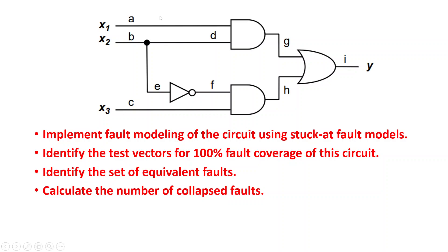This is the circuit we will be discussing today. X1, X2, and X3 are the three primary inputs and Y is the primary output. Every signal line has been named: A, B, then a NAND output named D, this signal is E, the input of the inverter is E, its output is F, then C, this line is H, this is G, and this is I. So we have a total of nine signal lines.